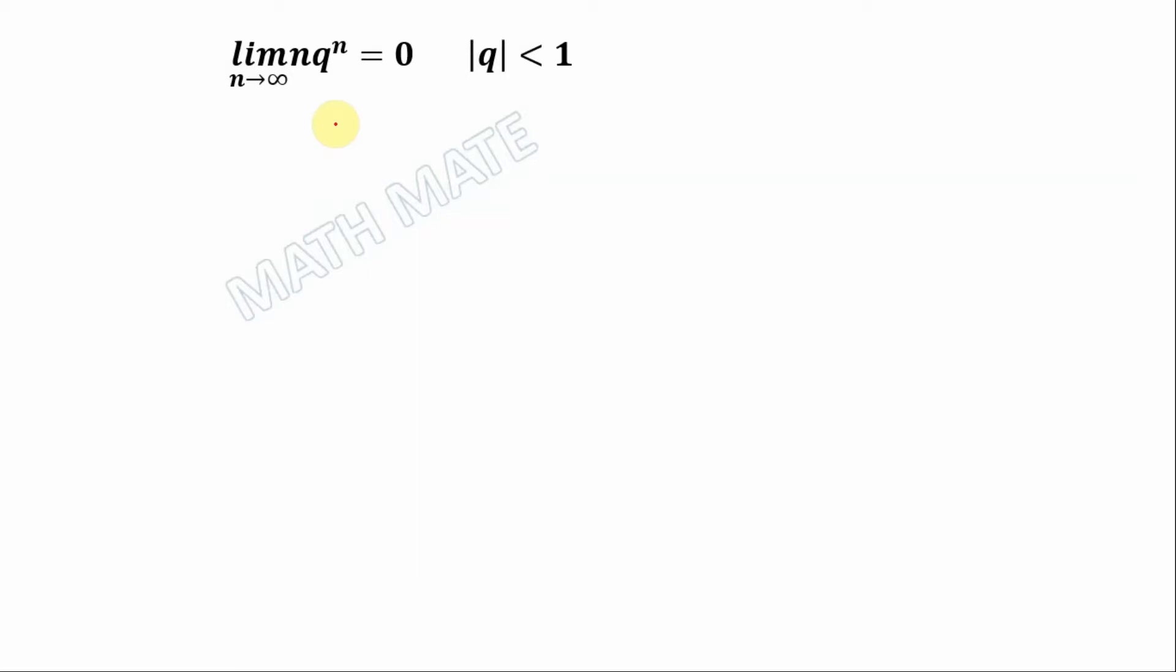Salaam alaikum friends. Today I'm going to prove that limit as n goes to infinity of n multiplied by q to the power of n equals 0 when the absolute value of q is less than 1. So let's review the case when q is between 0 and 1.